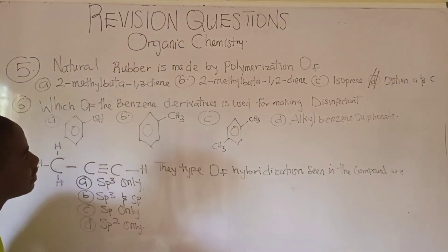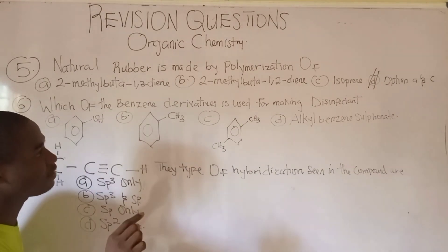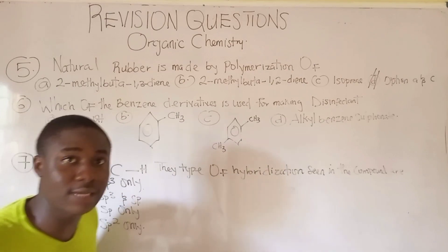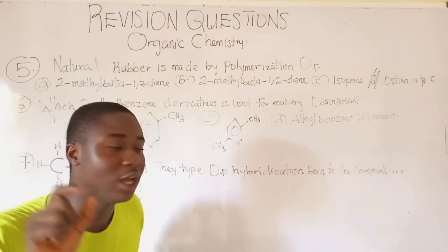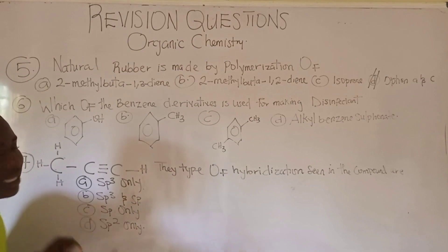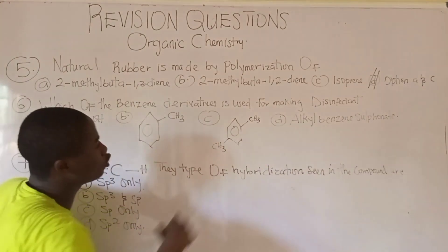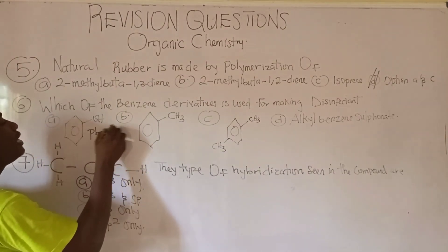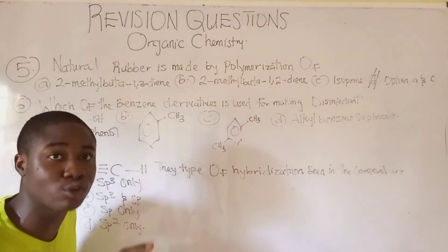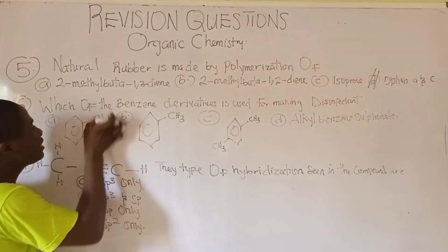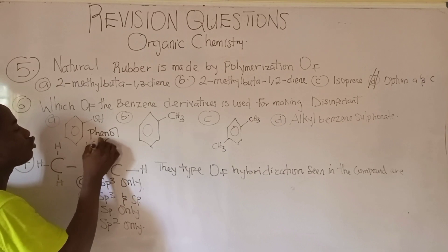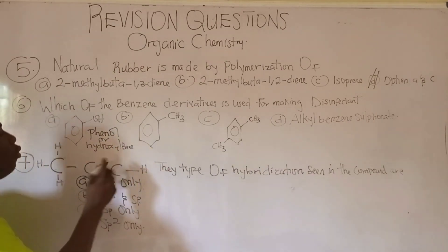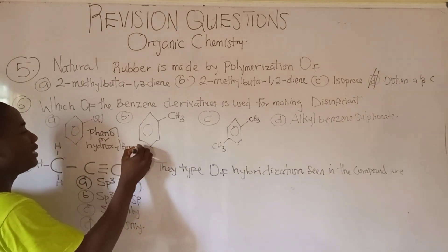Moving to question 6: which benzene derivative is used for making disinfectant? The benzene derivative used for making disinfectant is called phenol. Looking at the options, option A is a phenol — a benzene ring attached to a hydroxyl functional group, also called hydroxybenzene.